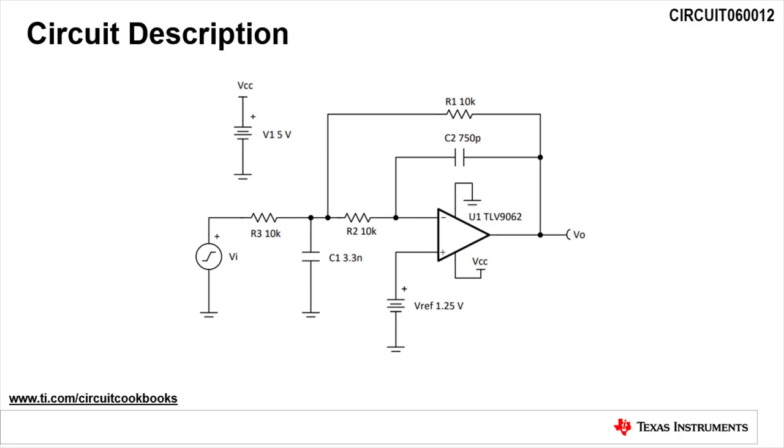Multiple-feedback filters are preferable when the gain is high or the Q factor is large, for example 3 or greater. This low-pass filter circuit has a gain of negative 1 volt per volt, which simply inverts the signal in the passband.